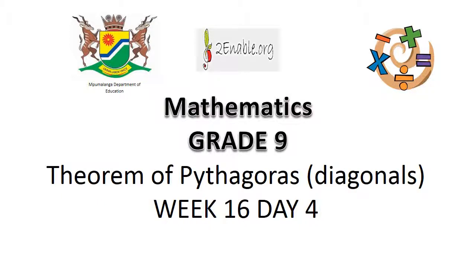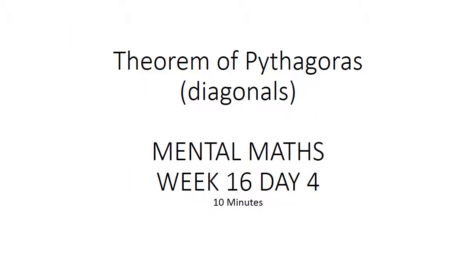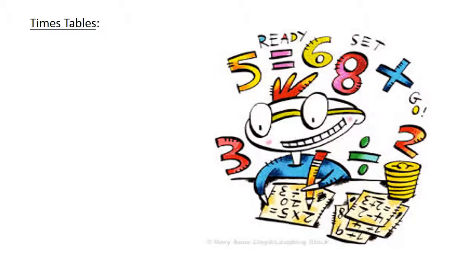Pythagoras diagonals. Mental math. Times tables. 8 times 6 equals 48. 6 times 7 equals 42.